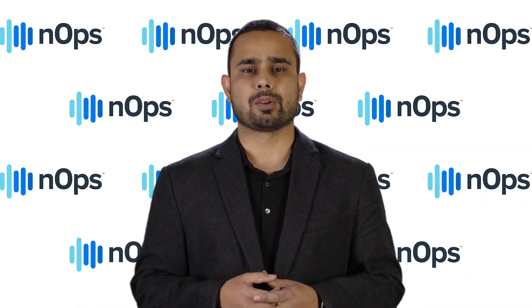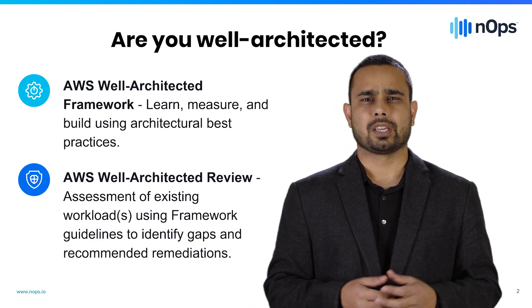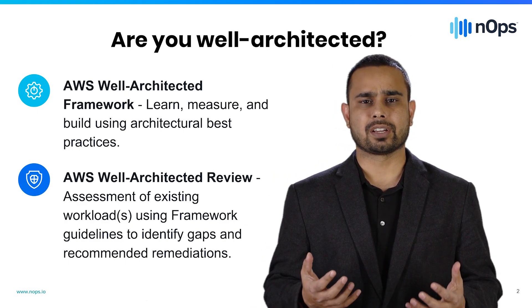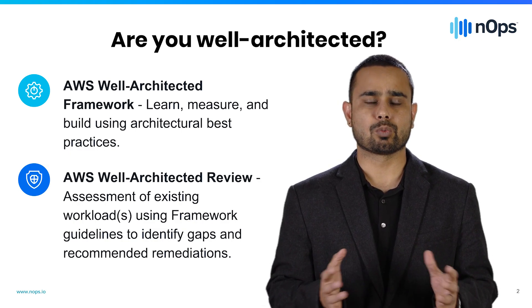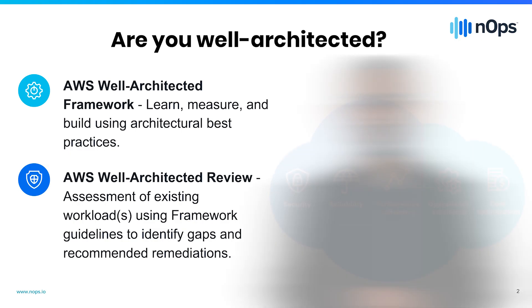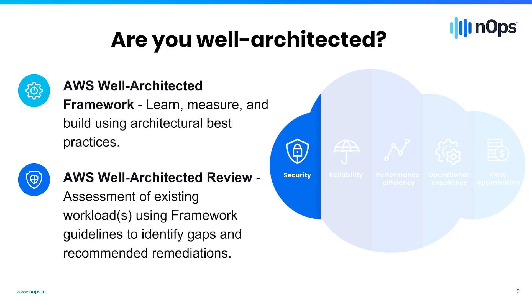If you're not familiar with Well-Architected Framework, this framework comes from AWS. It provides a set of best practices that every company should be following, no matter what type of workload you're running on AWS. It has five pillars: cost, security, reliability, performance, and operational excellence. For the purpose of this presentation, we'll focus on security.